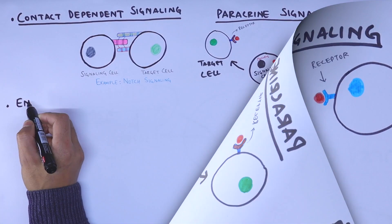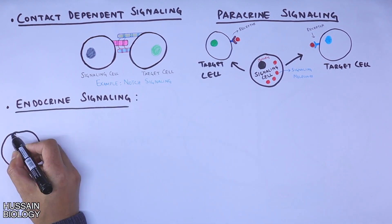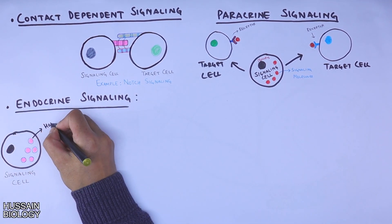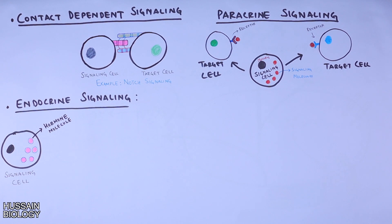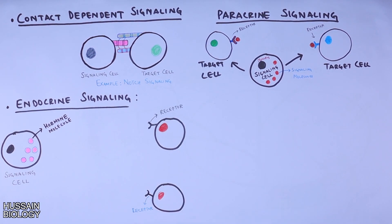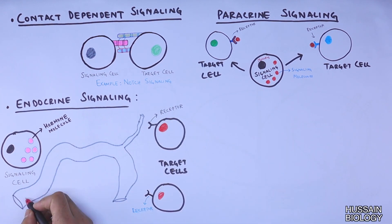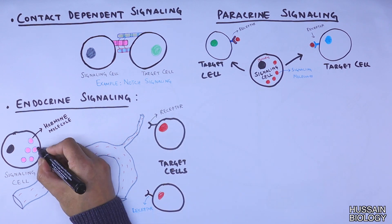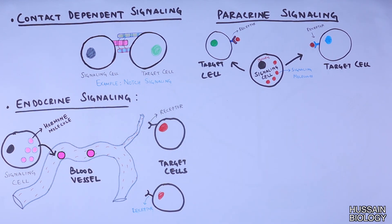Moving to endocrine signaling — here we have the signaling cell with signaling molecules in the form of hormones, and on the right we have target cells with receptors for these hormones. These cells are far away from the signaling cell, so in order to drive the signaling we have a medium in between, which is the bloodstream. The hormone molecules are secreted into the bloodstream, carried to the target site, and ultimately received by the target cell through receptors, driving endocrine signaling.